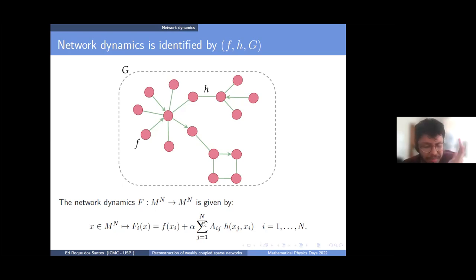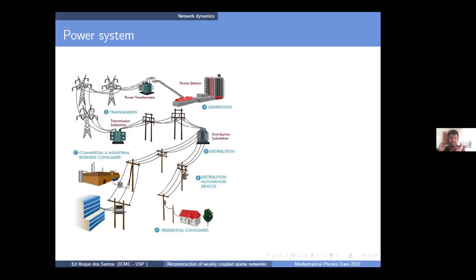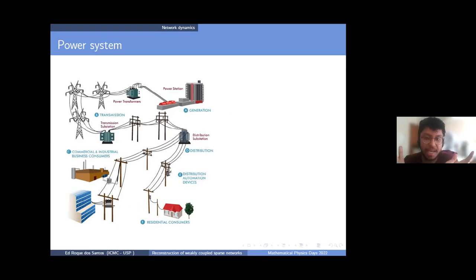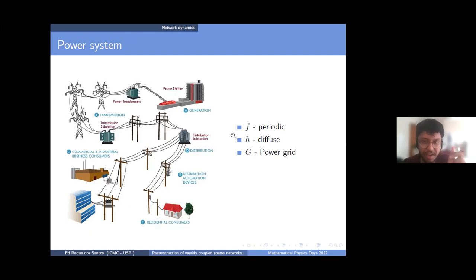This might be seen in diverse systems. Two examples: the first is power systems. You have a complicated power grid with energy generation that needs to be distributed and transmitted to consumers. This kind of system is modeled by network dynamics as just described. On each node — either a generator or a consumer — the isolated dynamics will be periodic, and how they are coupled to each other will be diffusive, depending on the phase difference of who they are connected to.